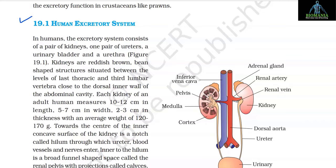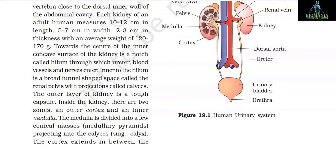Section 19.1: Human Excretory System. In humans, the excretory system consists of a pair of kidneys, one pair of ureters, a urinary bladder, and a urethra. Kidneys are reddish-brown bean-shaped structures situated between the levels of the last thoracic and third lumbar vertebra, close to the dorsal inner wall of the abdominal cavity. Each kidney of an adult human measures 10 to 12 cm in length, 5 to 7 cm in width, 2 to 3 cm in thickness, with an average weight of 120 to 170 grams.